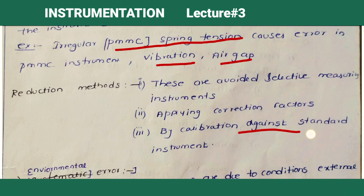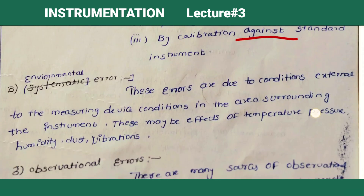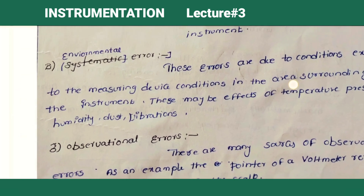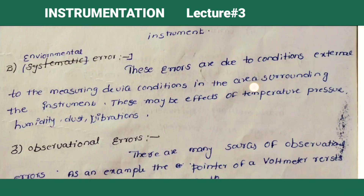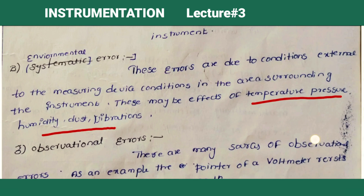Environmental errors are systematic errors due to the external conditions of the measuring instrument — where the instrument is working, the environment also has an impact. These may be affected by temperature, pressure, humidity, and dust — all of these come under environmental error. Due to a change in environmental conditions, if any error appears in the instrument reading, it is known as environmental error.